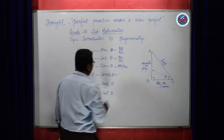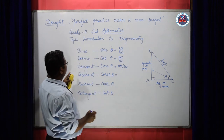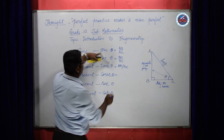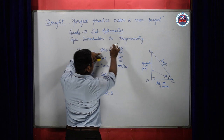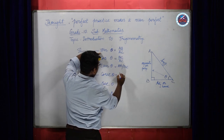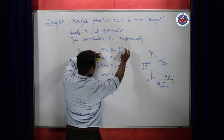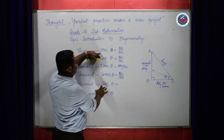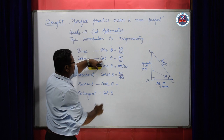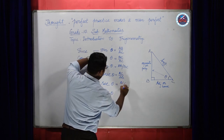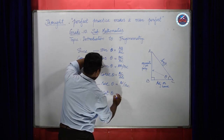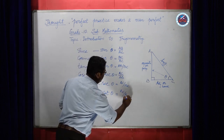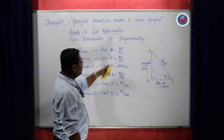The other three are reciprocals of the first three. Cosecant theta is the reciprocal of sine theta, so it is hypotenuse to its perpendicular: AC by AB. Then sec theta is the reciprocal of cos theta: AC by BC. And cot theta is the reciprocal of tan theta: BC by AB.